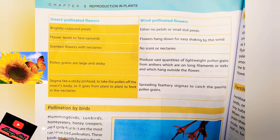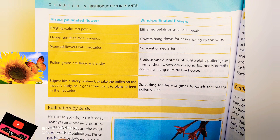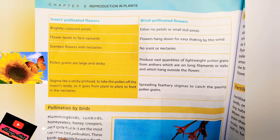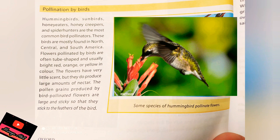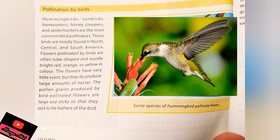Here is a comparison table of insect-pollinated flowers versus wind-pollinated flowers. The differences are clearly shown. The stigma of insect-pollinated flowers is sticky so it can catch pollen from insects. In wind-pollinated flowers, the stigma is feathery so it can catch pollen blown through the air.